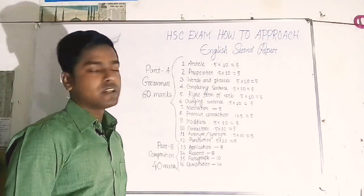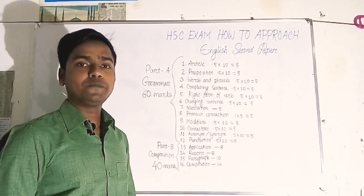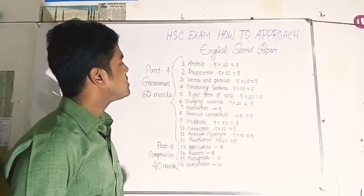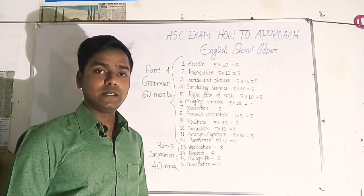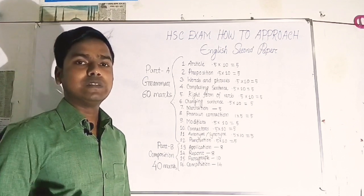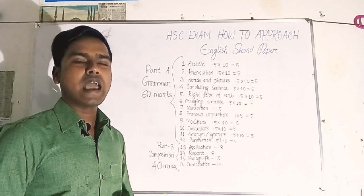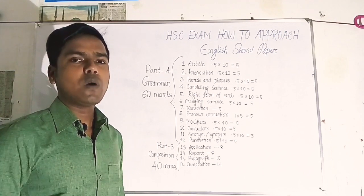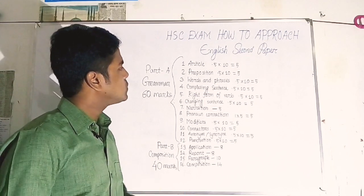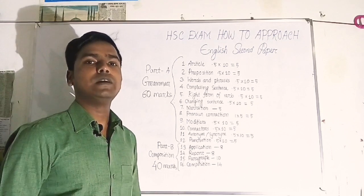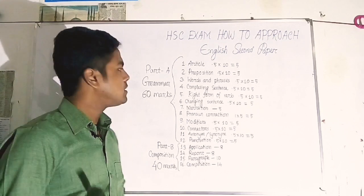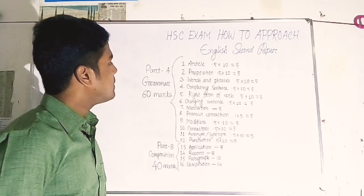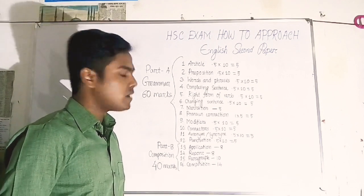Number 3 is Words and Phrases — this is the toughest grammar item for intermediate students. You need to know common phrases well. Common words include: would rather, had better, let alone, as if, as though. These are very common. Students who practice just two or three sentences will find this much easier. Total mark is 5.